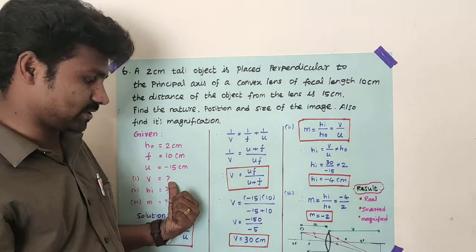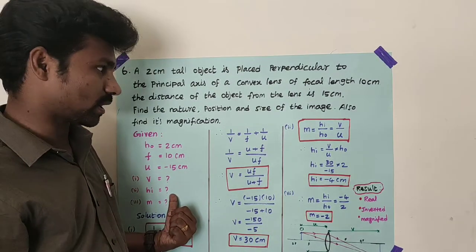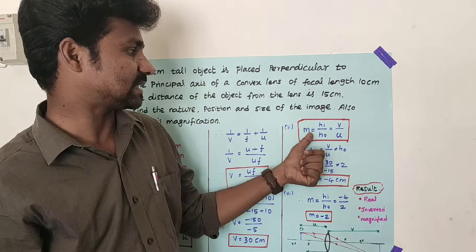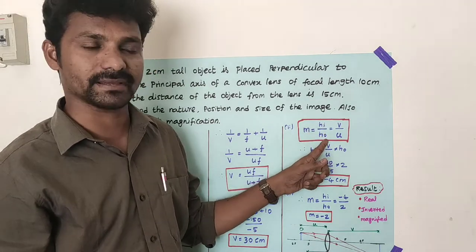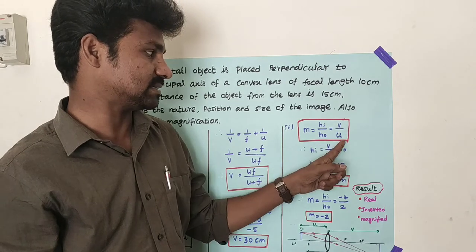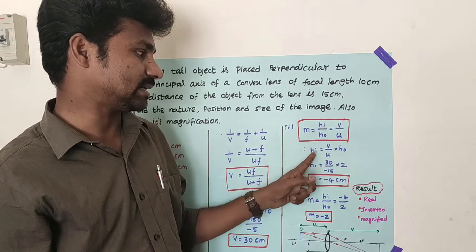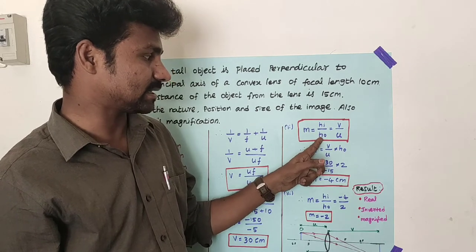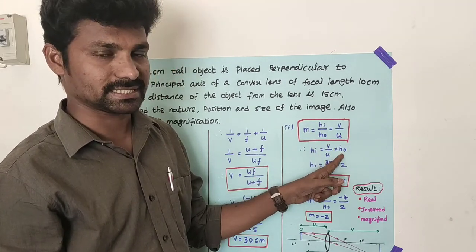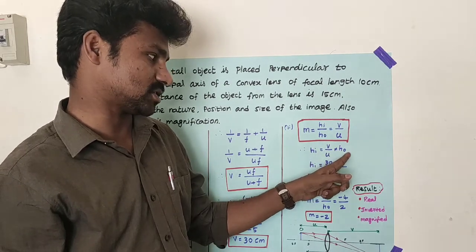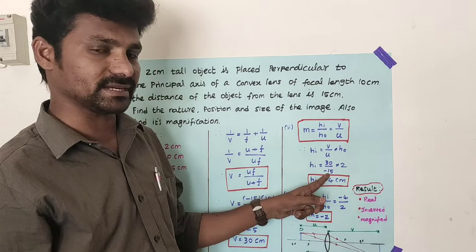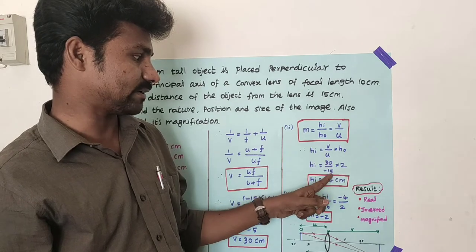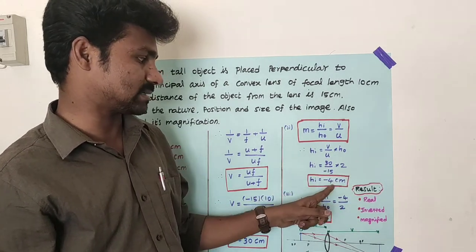Now we find the height of the image using the magnification formula: m = height of image divided by height of object = v divided by u. Rearranging, height of image (hᵢ) = (v/u) × h₀. Substituting v = 30 centimeter, u = minus 15 centimeter, and h₀ = 2 centimeter: (30 / minus 15) × 2 = minus 2 × 2 = minus 4. So the height of the image is minus 4 centimeter.